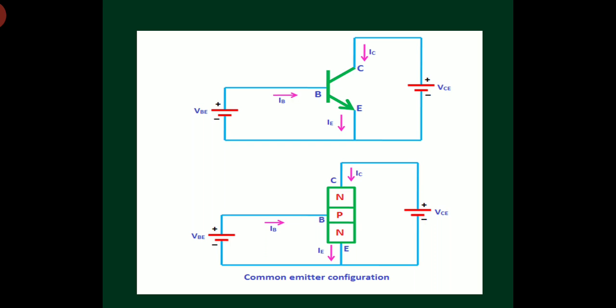The junction between emitter and base is called the input junction, and the junction between base and collector is known as the output junction. Input junction is also called junction J-E, and output junction is also called junction J-C. Junction J-E is formed between the highly doped emitter and lightly doped base, whereas junction J-C is formed between the lightly doped base region and the moderately doped collector region.